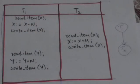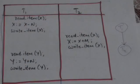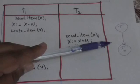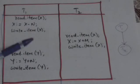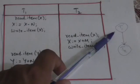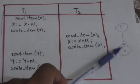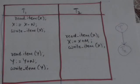Now see in this precedence graph there is no cycle. Therefore this schedule is conflict serializable, because the precedence graph does not have any cycle.